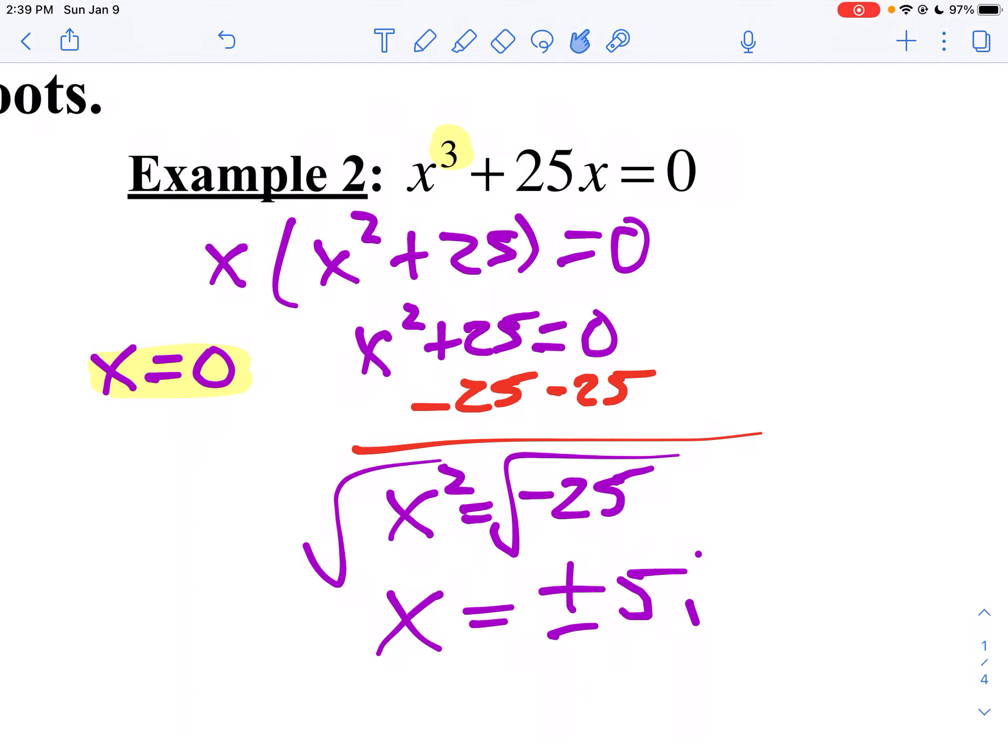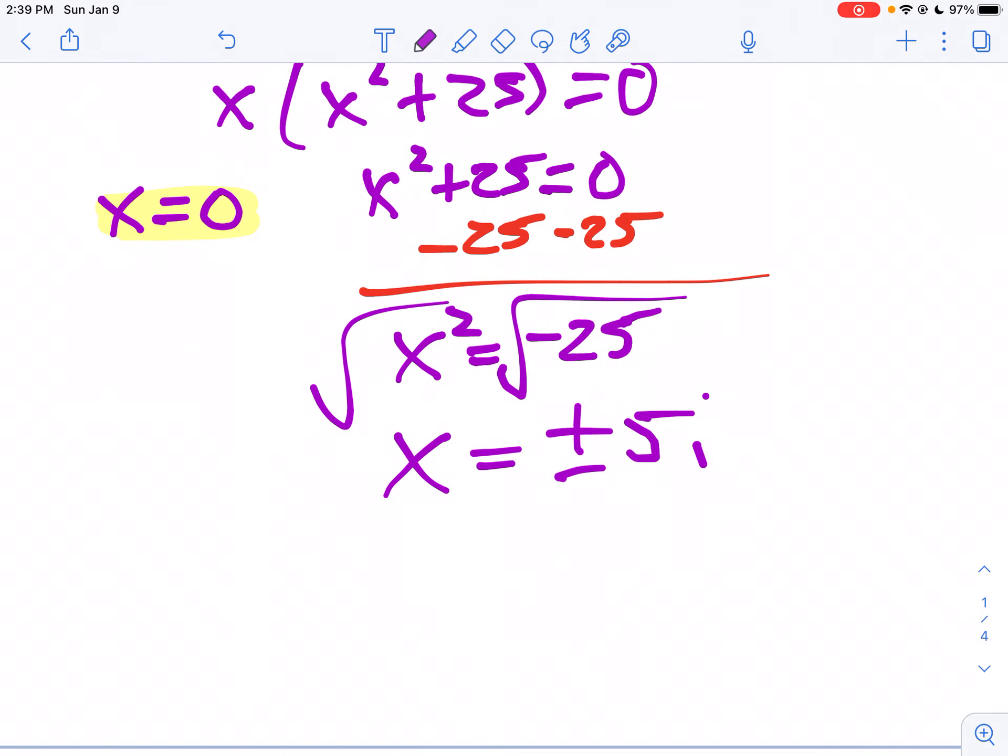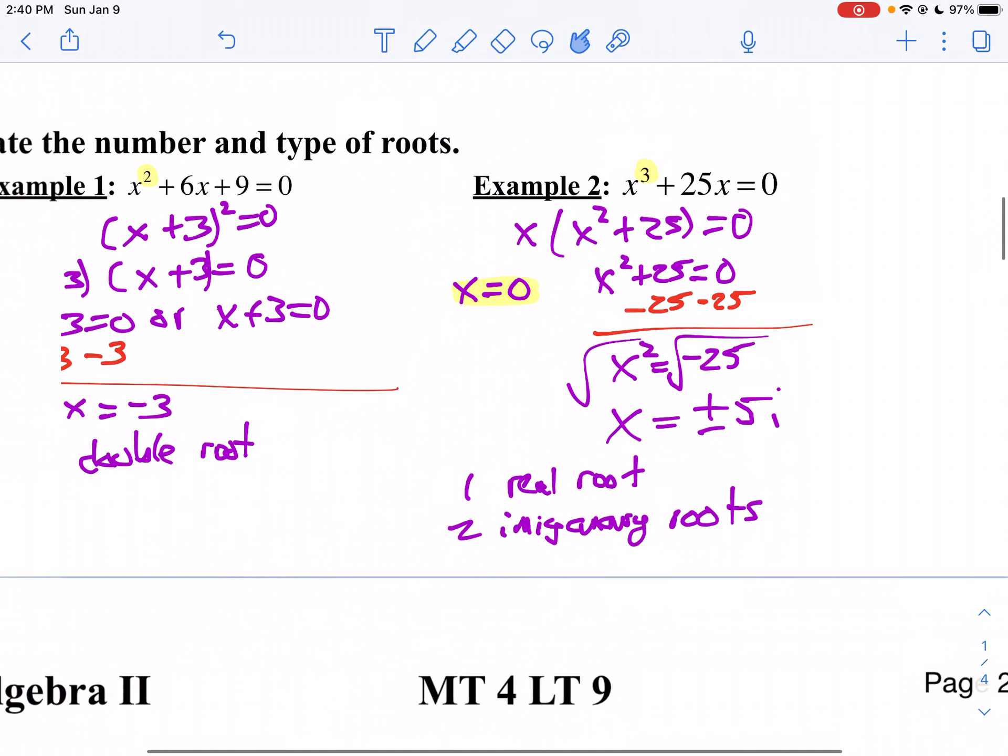So I have a total of three roots. One of them is real, because x = 0. So I have one real root. And I have two imaginary roots. ±5i are my imaginary numbers.